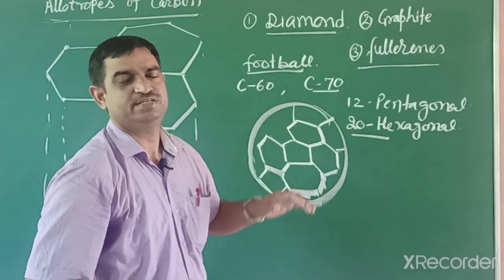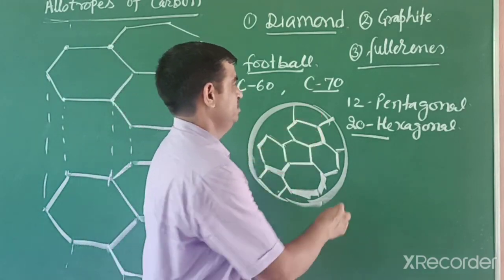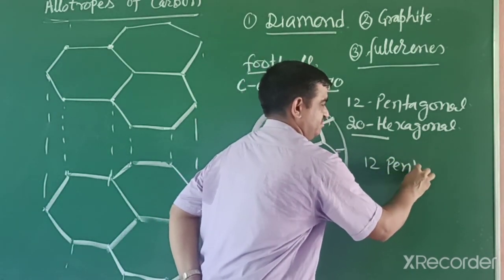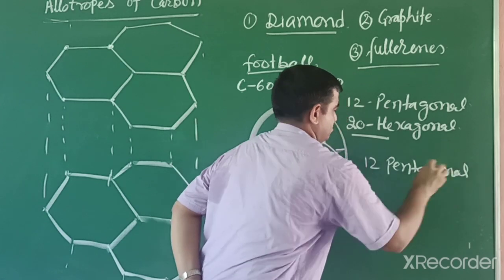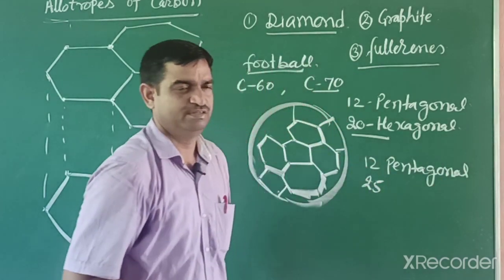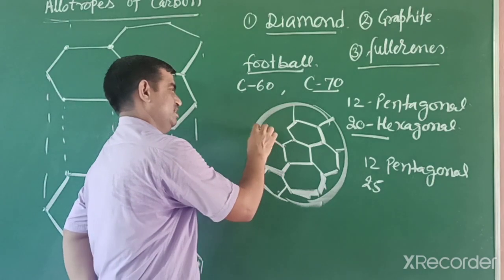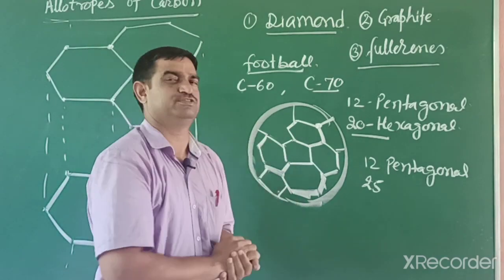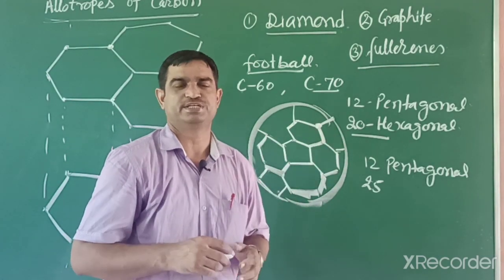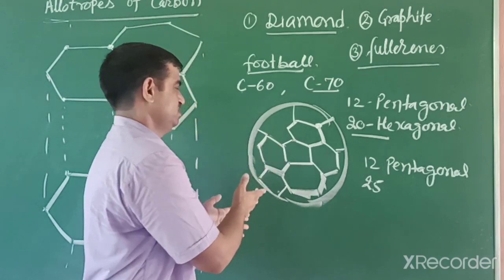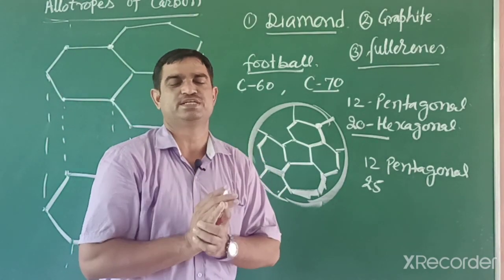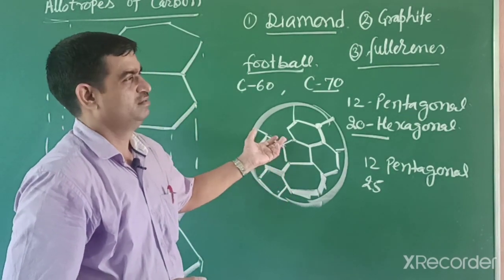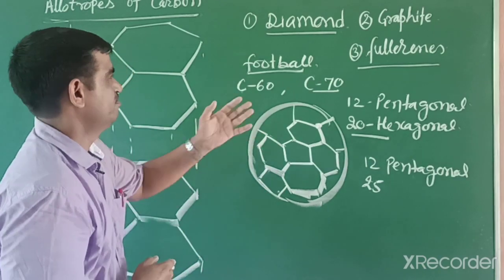In C-70, there are 12 pentagonal and 25 hexagonal rings. Every carbon is attached to three other carbon atoms, so one electron is free and it can also pass current. Fullerene is used for making nanotubes - it has a geodesic dome-like hollow structure. You can search in detail on Wikipedia or Google about fullerene.